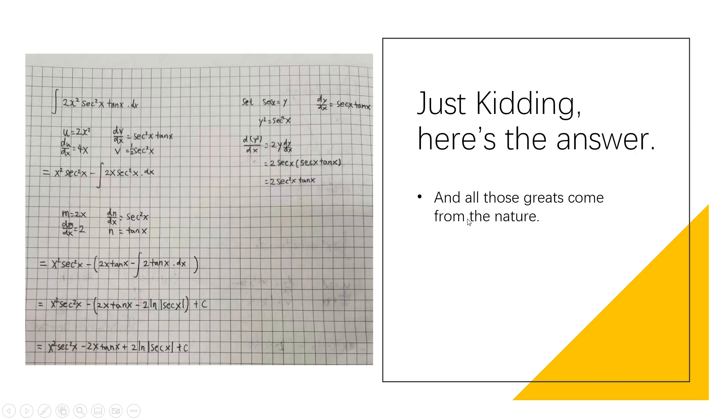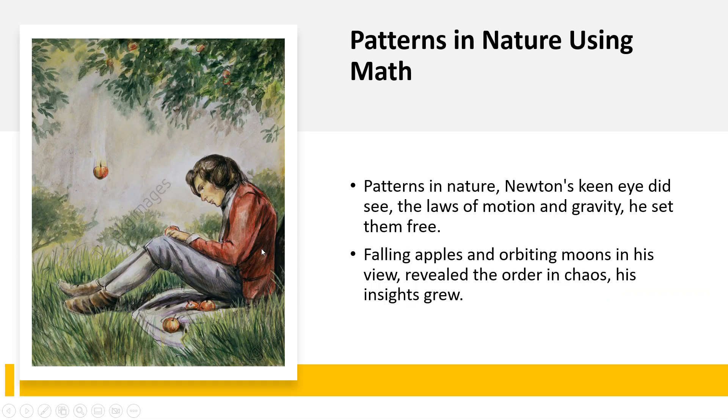For all those great minds comes from nature, comes from Isaac Newton. This picture seems familiar to you. You might have heard about an apple and a young man. Here's a story you might have heard about, the story about gravity and the patterns in nature using math. Patterns in nature Newton's keen eye did see. The laws of motion and gravity he set them free. Falling apples and orbiting moons in his view revealed the order in chaos. His insights grew.